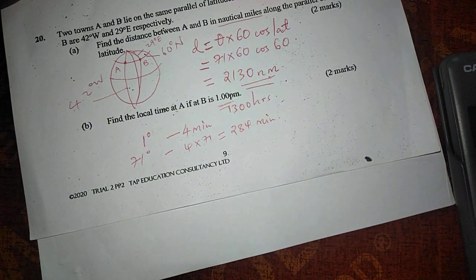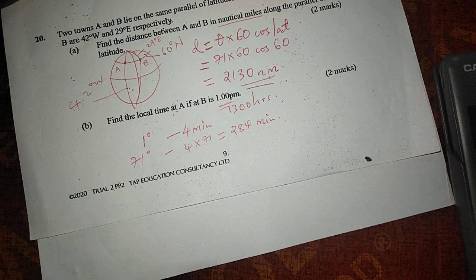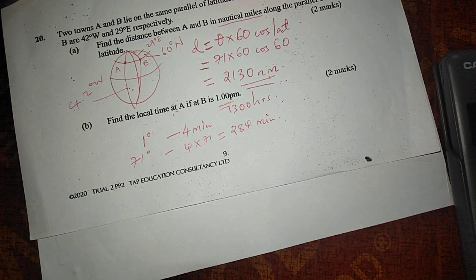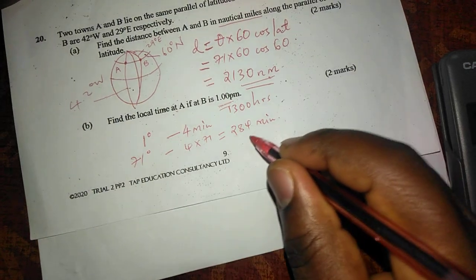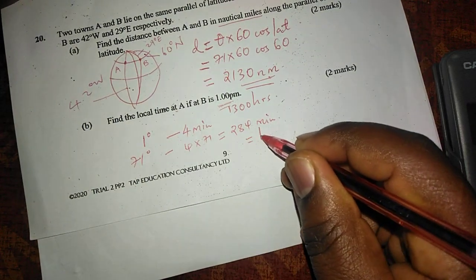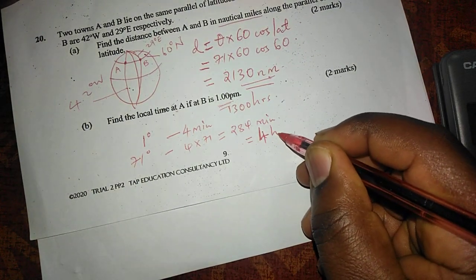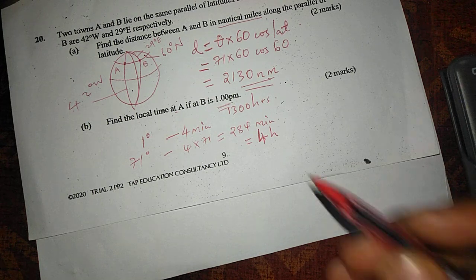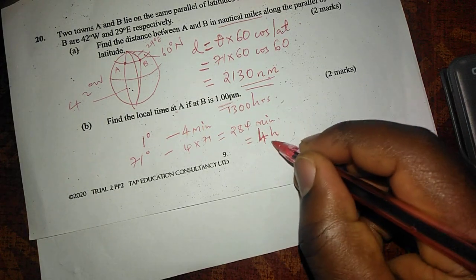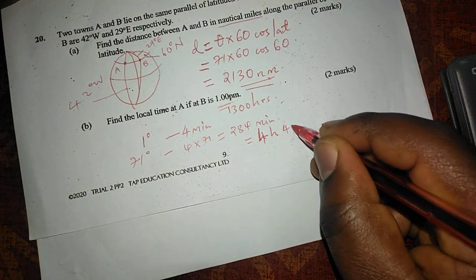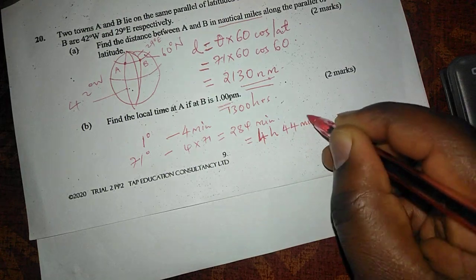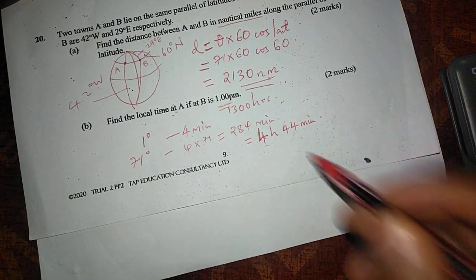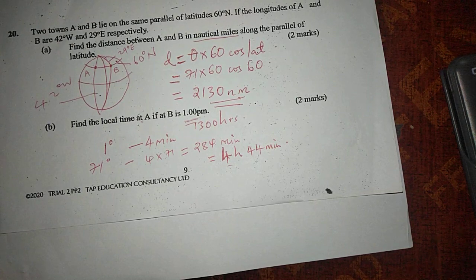284 minutes. So 284 minutes, we know that 4 hours will be 240 minutes. So when we take 240 minutes and we subtract from 284, we'll have 4 hours and 44 minutes. So this is the time difference between A and B.